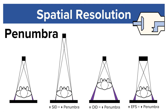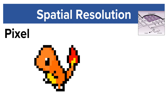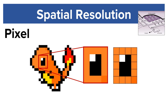Two factors that affect spatial resolution after x-rays hit the image receptor are pixels and matrices. A pixel is the smallest unit of a digital image. As we zoom into Charmander and zoom even closer to his eye, we can see that his eye is made up of individual pixels.